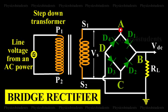The input ends A and C of the network are connected to the secondary ends S1 and S2 of the transformer. The output ends B and D are connected to the load resistance RL.